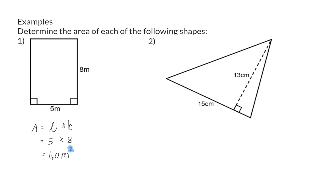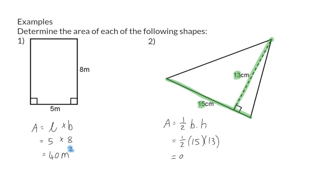In example 2 we have a triangle and the formula will be half times the base times the perpendicular height. In our sketch we have one of the sides of the triangle given as 15, which will form our base. From here, if we draw a line perpendicular to the highest point of this triangle it will be 13, and that is our perpendicular height. So for our area we will have half of our base of 15 multiplied by the height of 13, which will give us a final answer of 97.5 centimeters squared.